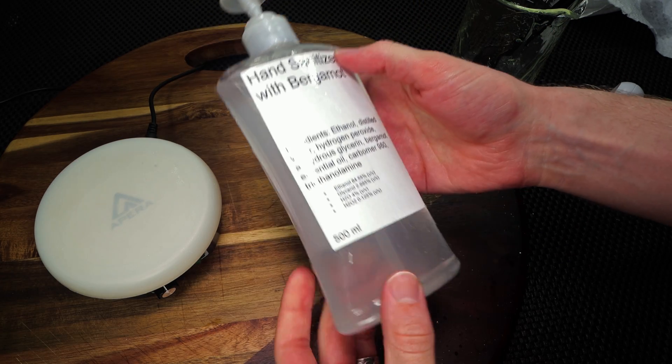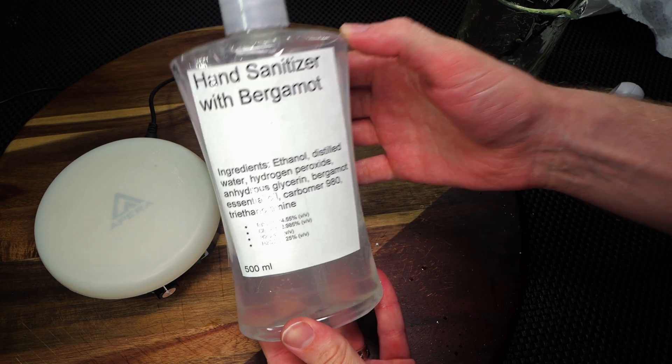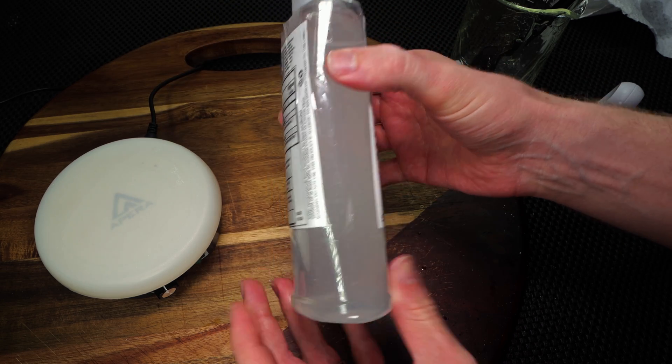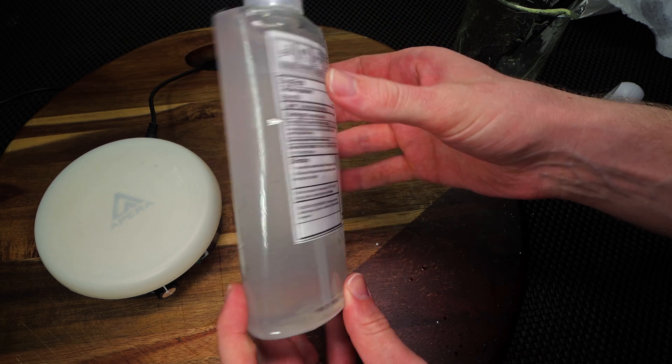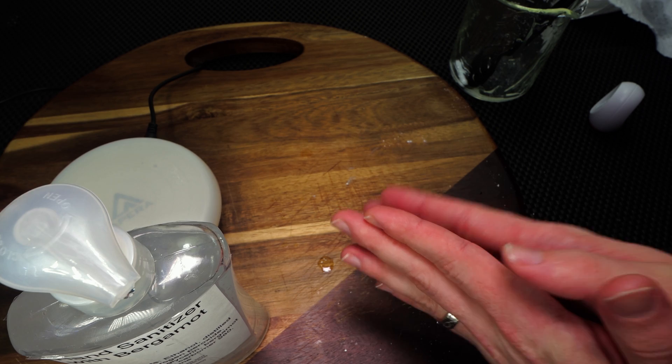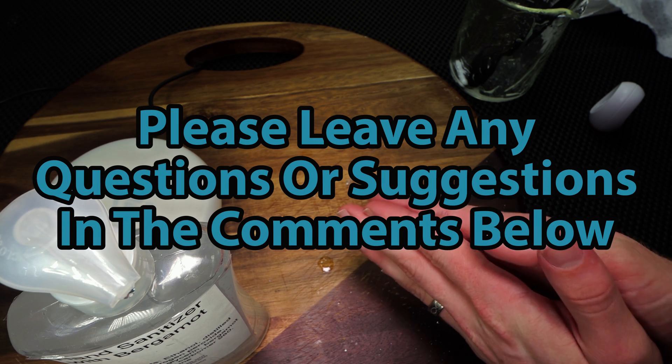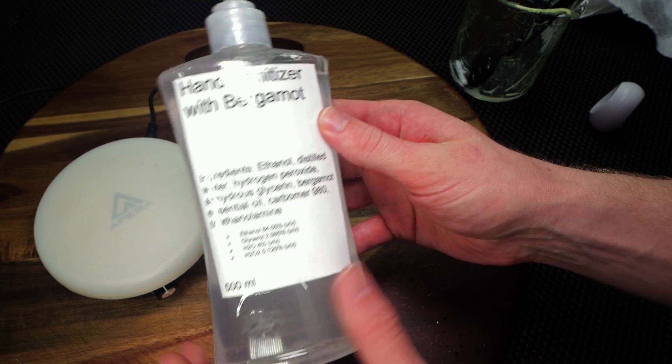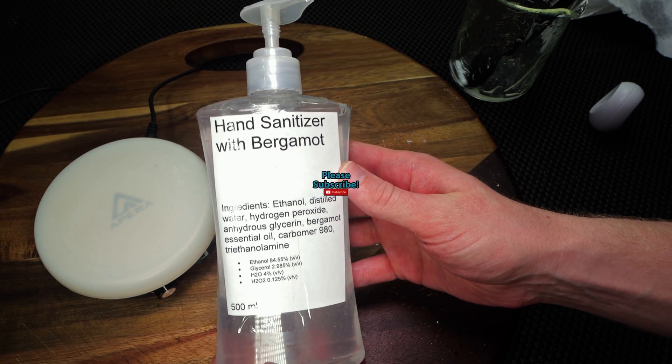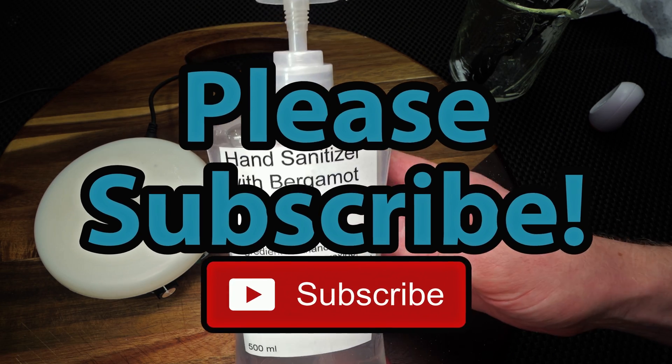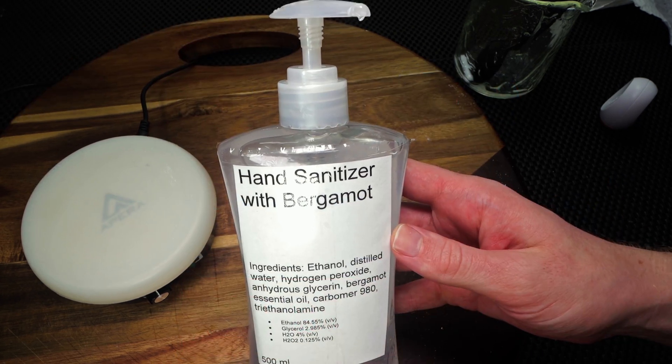But either way guys, this is all that I have for you today. This has been my do-it-yourself on how to make a clear gel hand sanitizer infused with some bergamot. This is a really fun thing to do. I just want to say thank you to everyone for checking it out. If you guys have any questions or suggestions, as always, please drop those in the comment section below. If you enjoyed this video and you'd like to see more like it, please subscribe. As always, thank you so much for checking this out and I hope you all have a great day. And I cannot wait to see you in the next video.